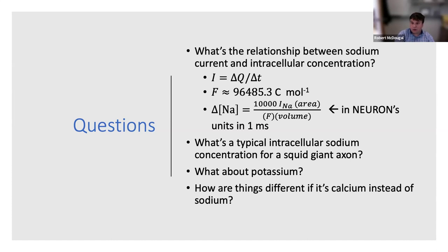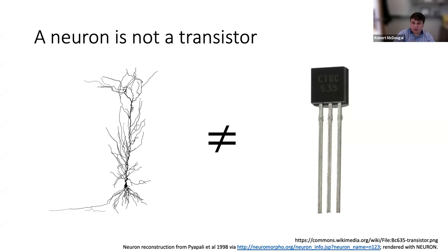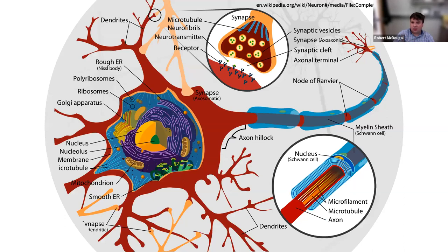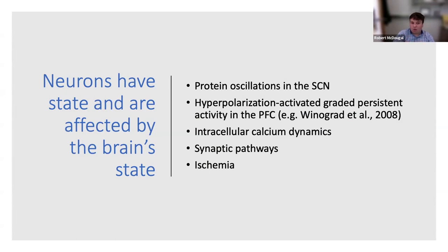Fundamentally, a neuron is not a transistor — it's a living cell dealing with ion accumulation. It has state, and changes in concentration have consequences both inside and outside the cell with each action potential. There's a lot going on in and around a neuron. This happens over and over again in the brain — it's not just a story about action potentials.